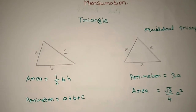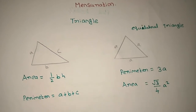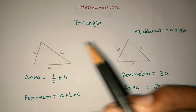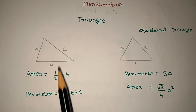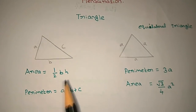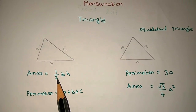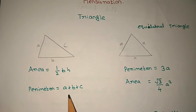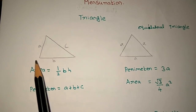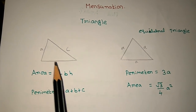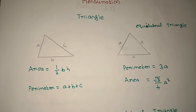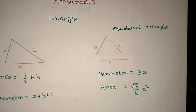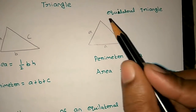Let's go to the Triangle. There are some types of triangles. First is the Scalene Triangle. This is a normal triangle. The area is half base times height: ½ × B × H. The perimeter is A plus B plus C. Next is the Equilateral Triangle, where all three sides are equal.